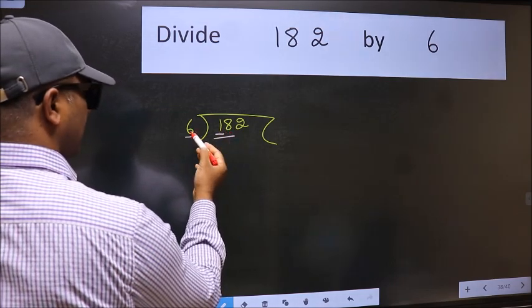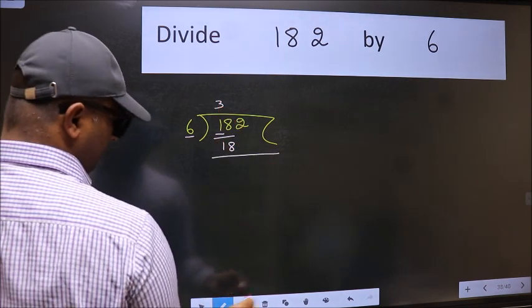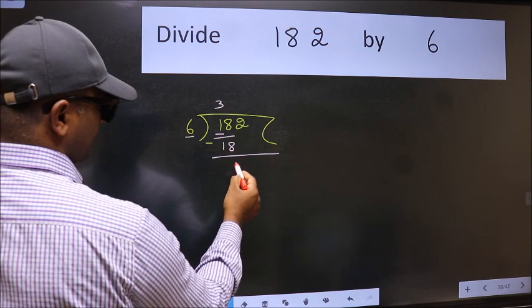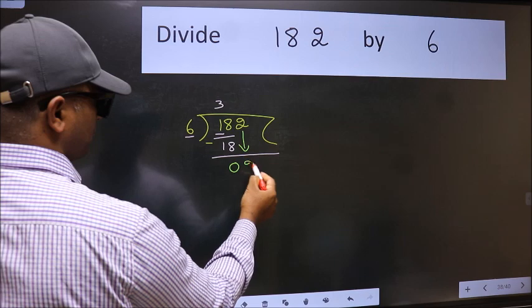When do we get 18 in the 6 table? 6 times 3 is 18. Now we should subtract. We get 0. After this, bring down the next number. So, 2 down.